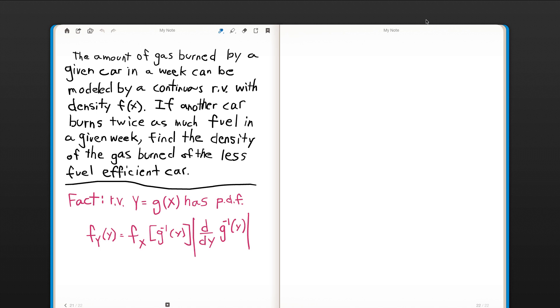The amount of gas burned by a given car in a week can be modeled by a continuous random variable with density f(x). If another car burns twice as much fuel in a given week, find the density of the gas burned of the less fuel efficient car.